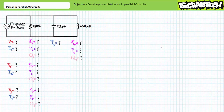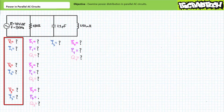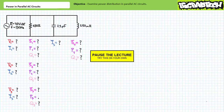Our second illustrated example problem features a parallel combination of three elements. The first element is a 470 ohm resistor, the second element is a 2.2 microfarad capacitor, and the third element is a 250 millihenry inductor. The source has an effective value of 40 volts and an excitation frequency of 150 hertz. Stage one necessitates we solve for the voltage drop across each element, the current through each element, and the source current. By all means, pause the lecture and try stage one on your own.